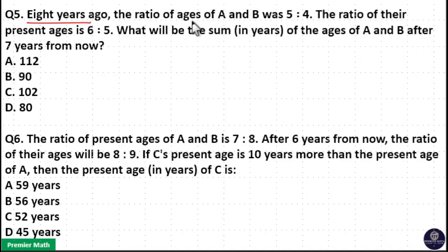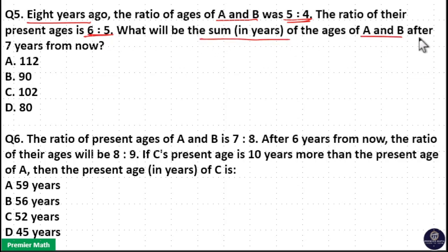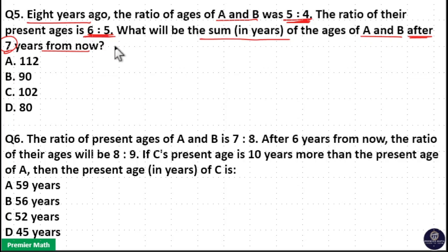8 years ago, the ratio of ages of A and B was 5 is to 4. The ratio of their present ages is 6 is to 5. What will be the sum of ages of A and B after 7 years from now? Here, 8 years ago ratio is 5 is to 4 and present age ratio is 6 is to 5.